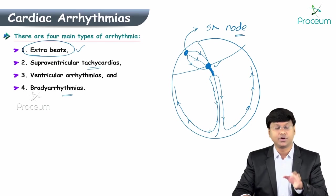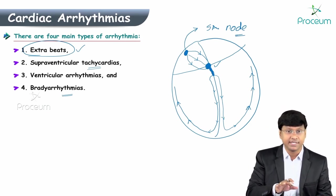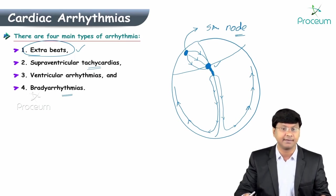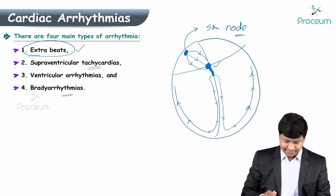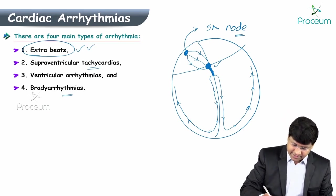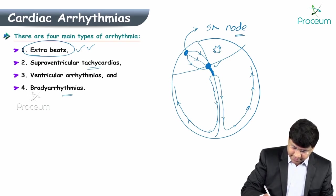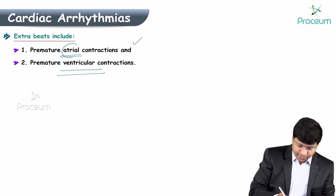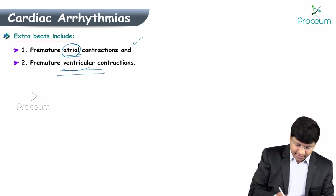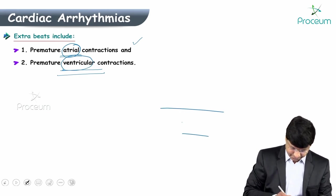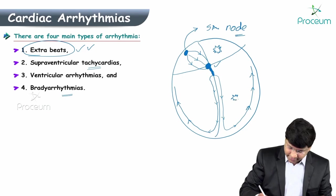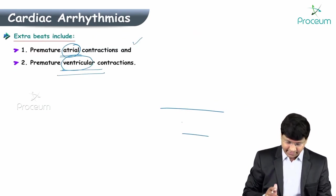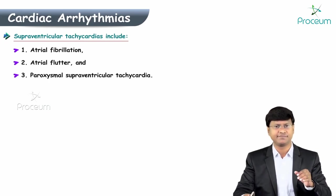The impulse must originate from the SA node to produce a sinus rhythm. If impulses originate away from the conducting system, the individual will have an abnormal rhythm on ECG. For example, in extra beats, the abnormal impulse originates anywhere within the atria apart from the SA node, giving rise to premature atrial contractions. In premature ventricular contractions, the abnormal rhythm originates anywhere within the ventricle.